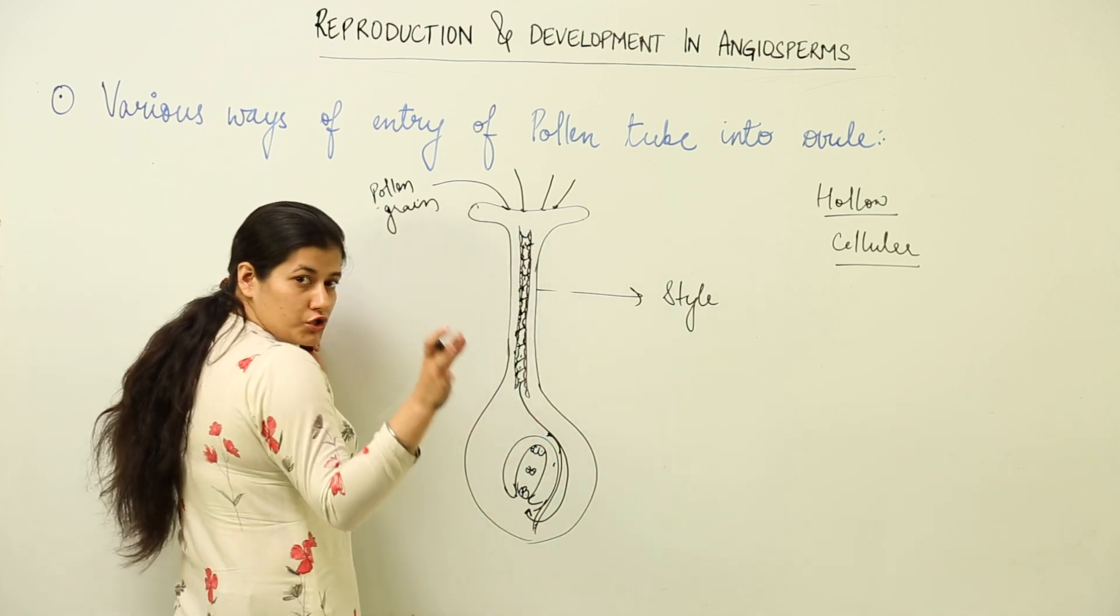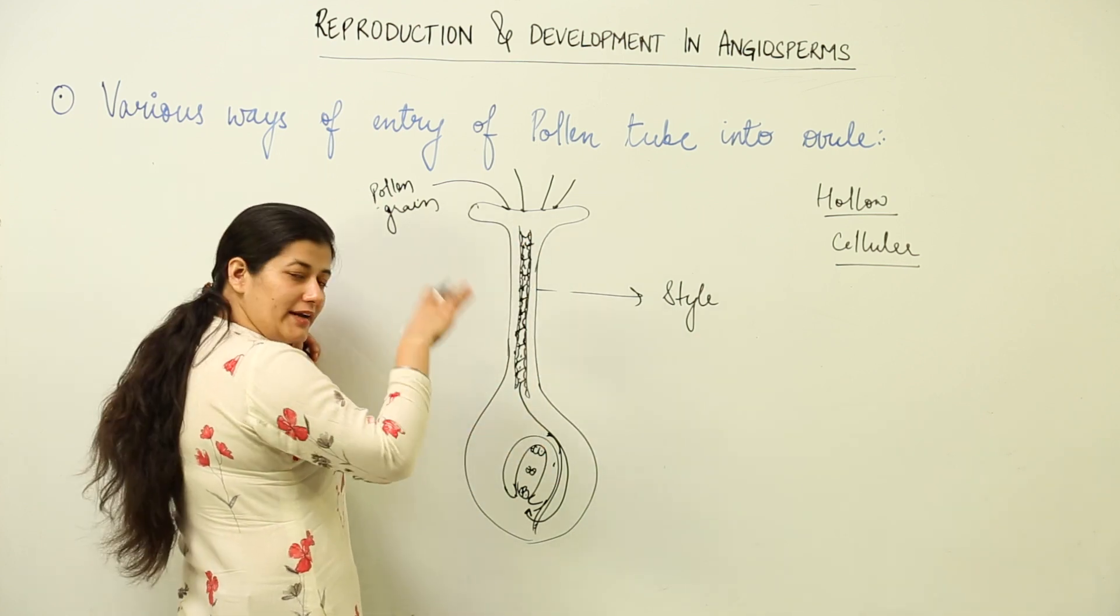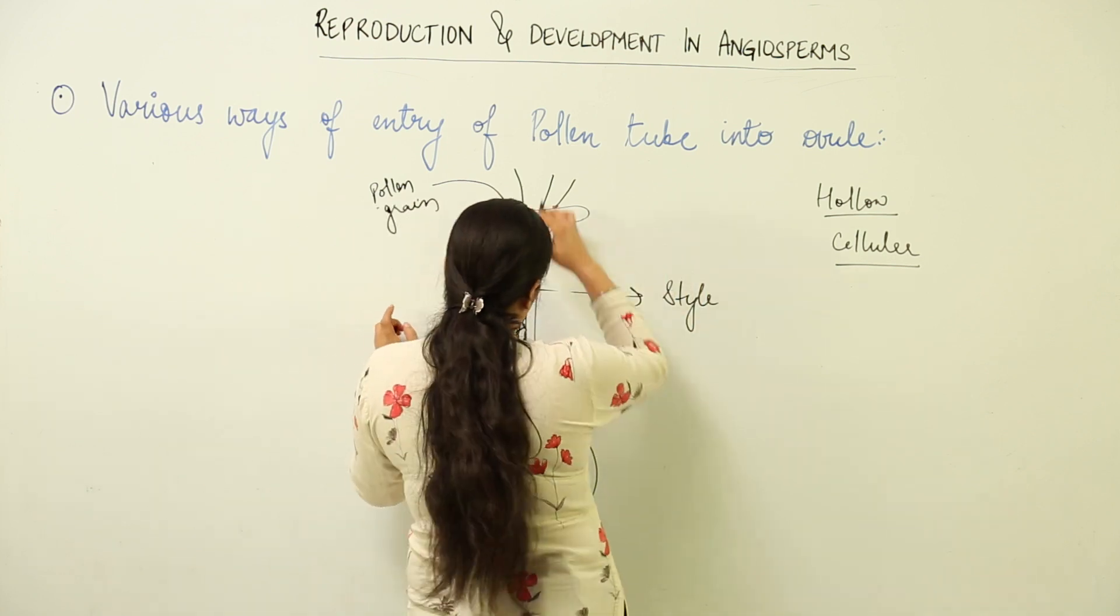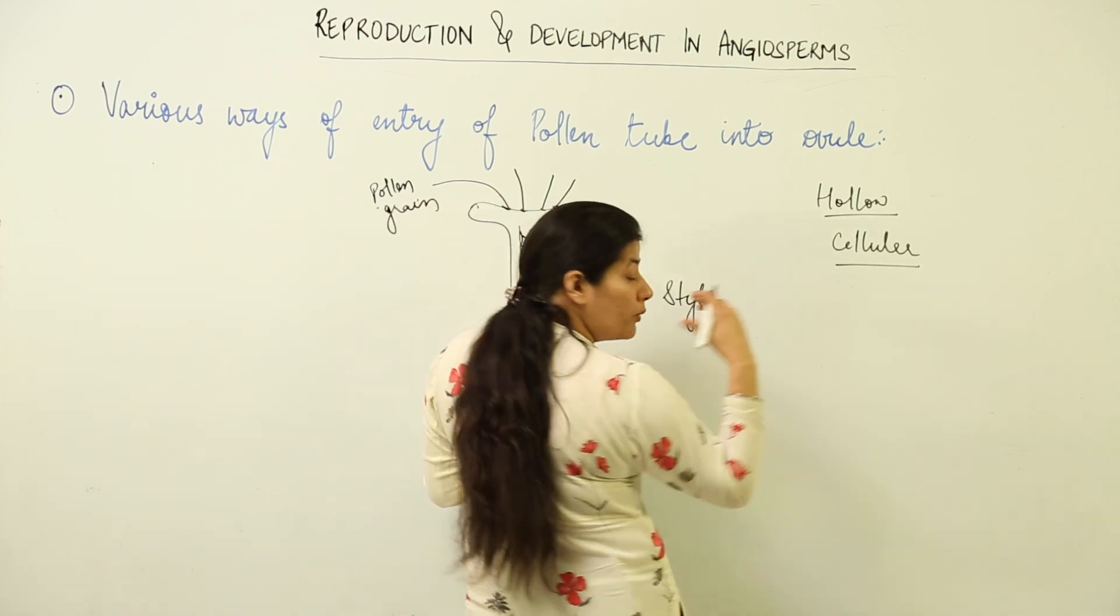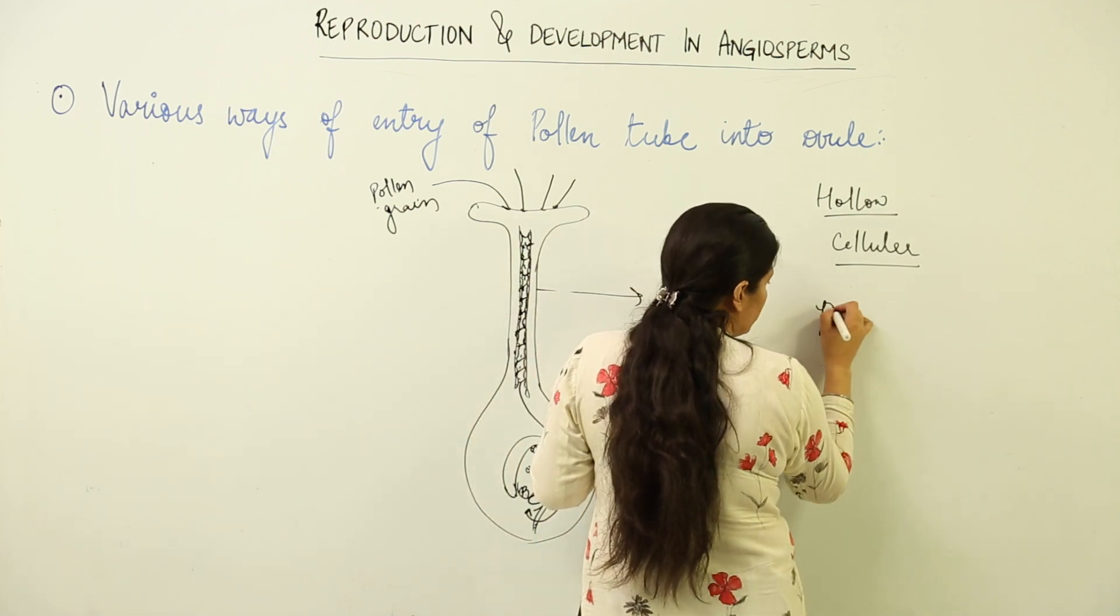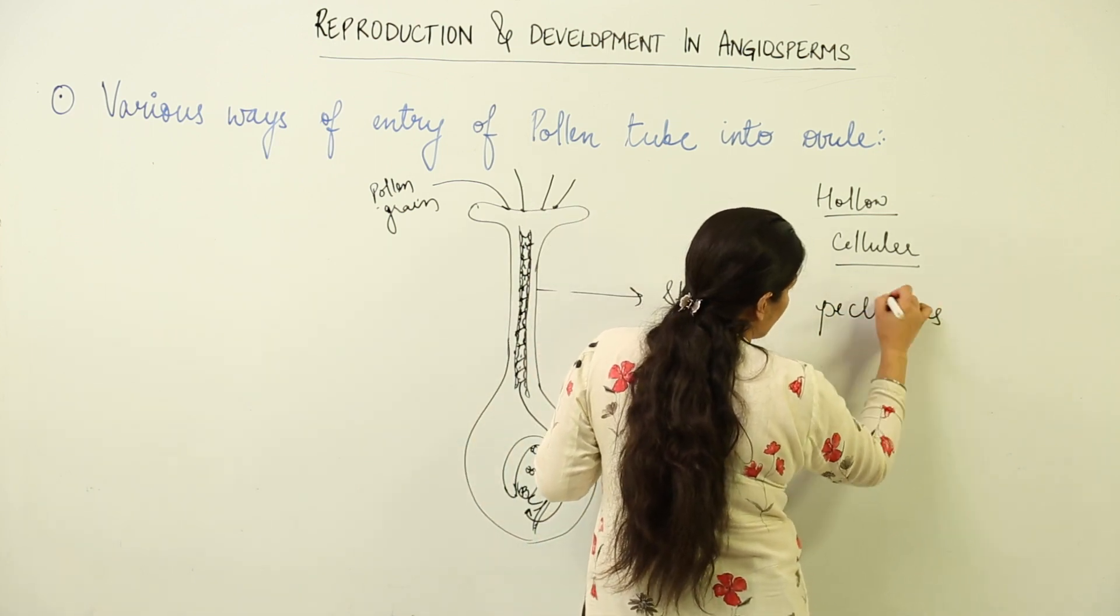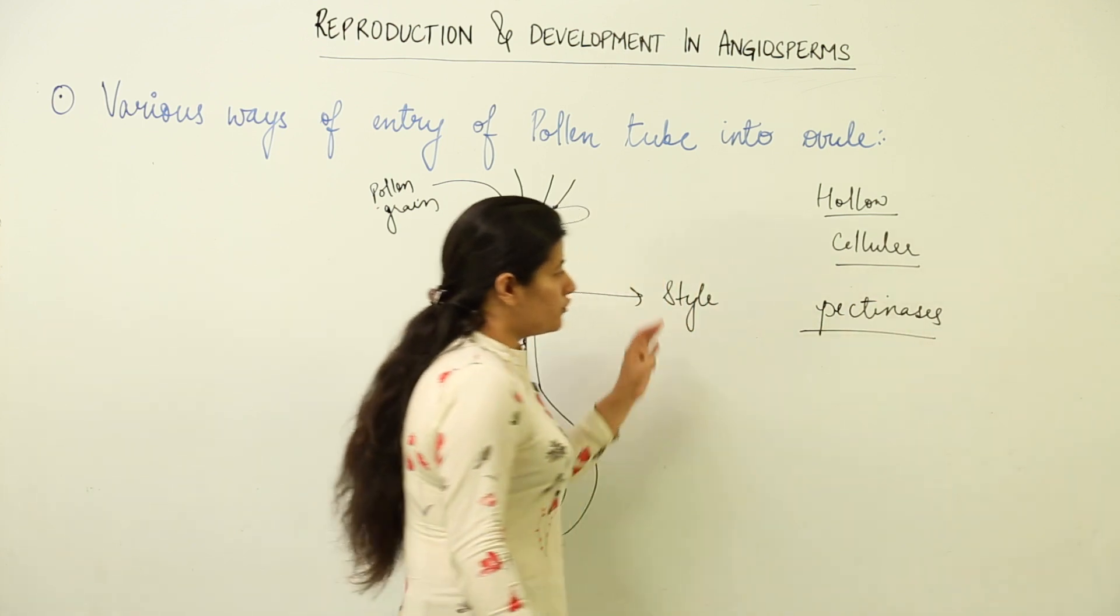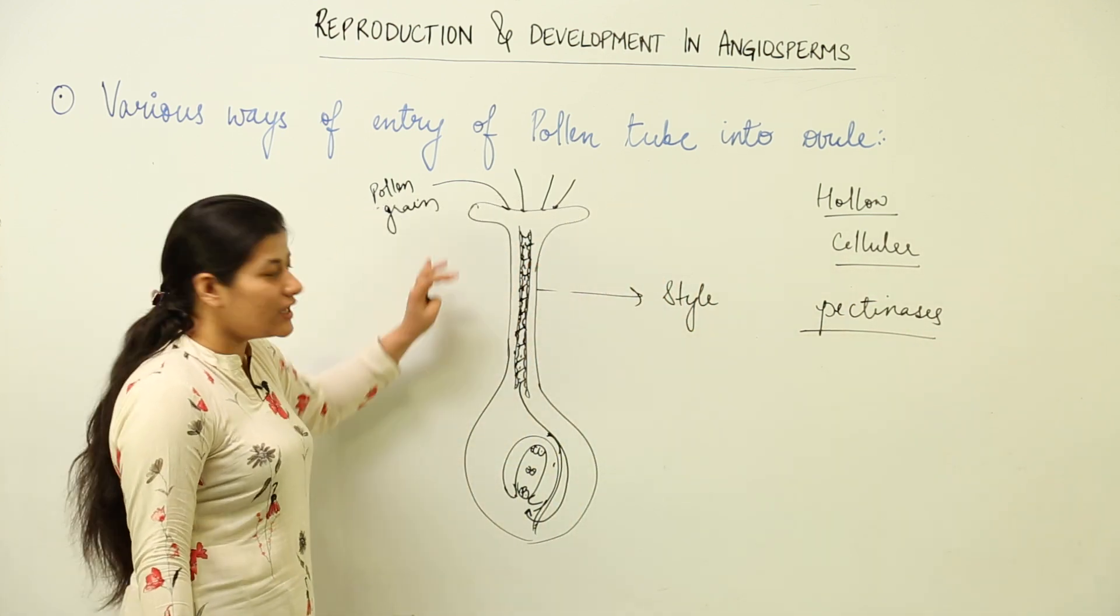In case the style is not hollow, it is having cells present. There is no hollow chamber that allows the passage of pollen tube easily. At that condition, the pollen grain would form the pollen tube, and the pollen tube would release pectinases.